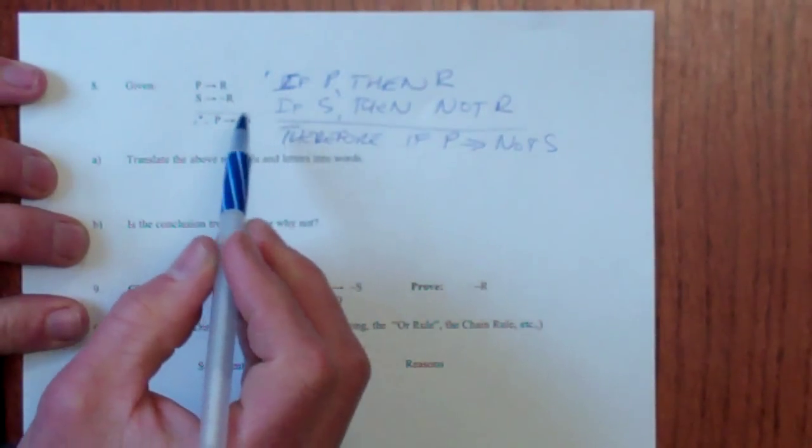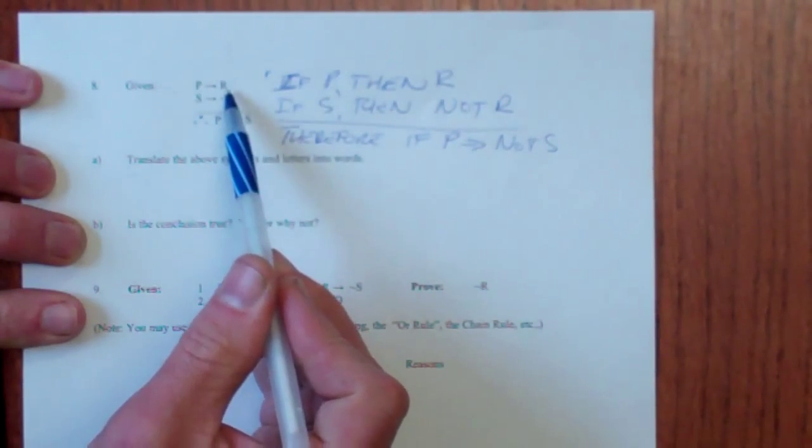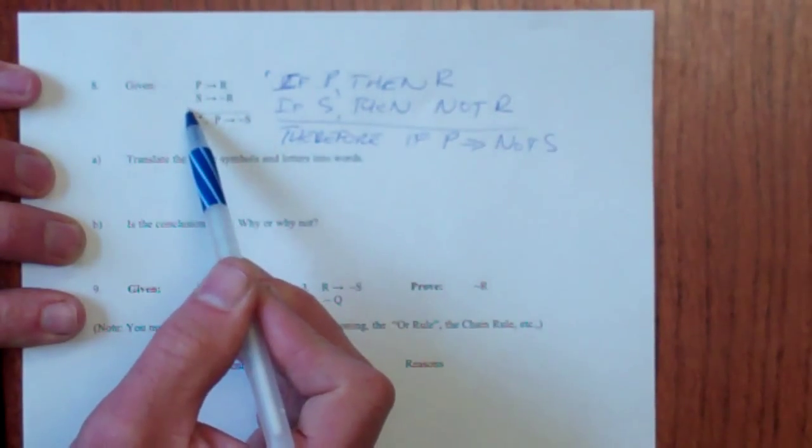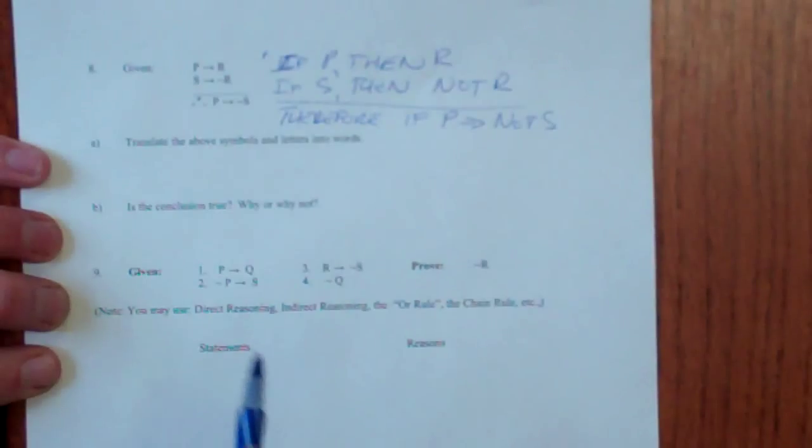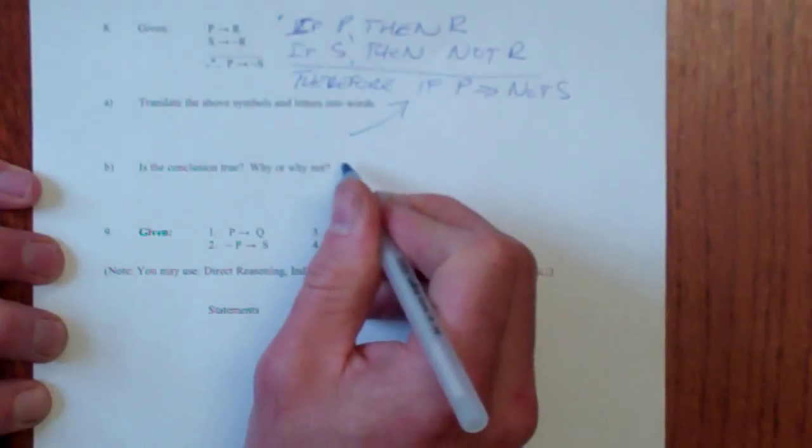That if we know P is true, R is true. That's direct reasoning. If we know R is true, then not not R means not S. And that's indirect reasoning coming back. So that does check out. So there's the answer there. Is the conclusion true? I just did it. It is yes.